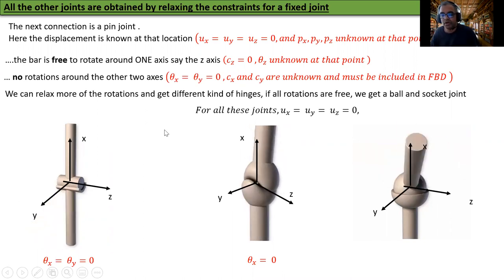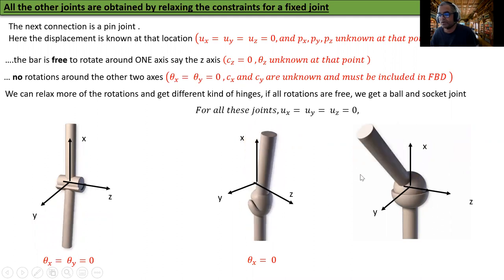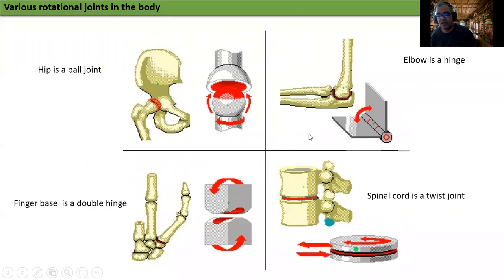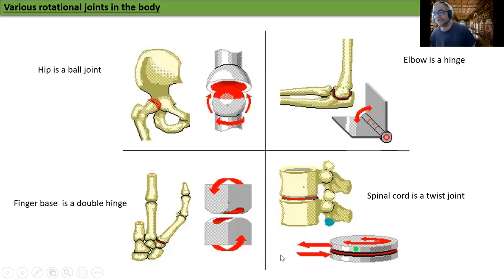In the body there are various kinds of rotational joints: the hip joint is a ball joint where all three rotations are allowed and no translations are allowed. Your elbow is a hinge joint. The finger base, because you can move it both forward/backward and sideways, is a double hinge. Your spinal cord is a single degree of freedom twisting joint. These give us a good idea of what kinds of joints exist.